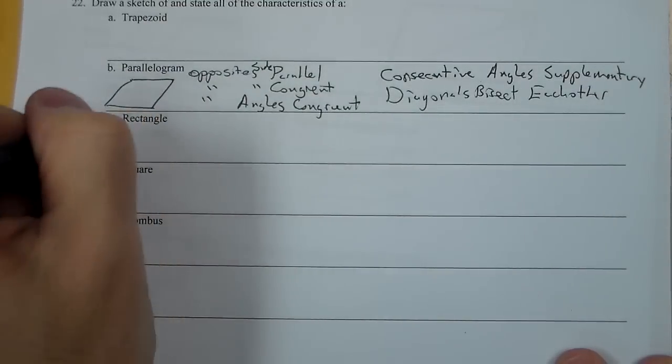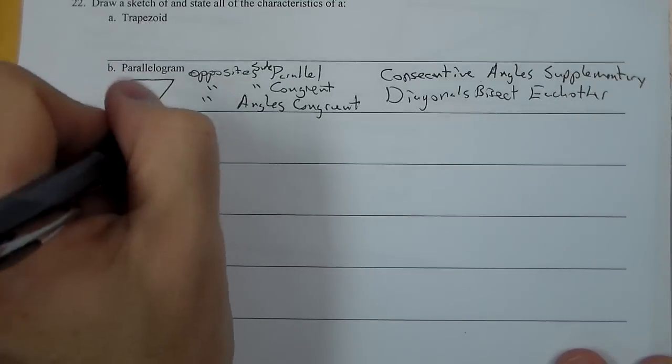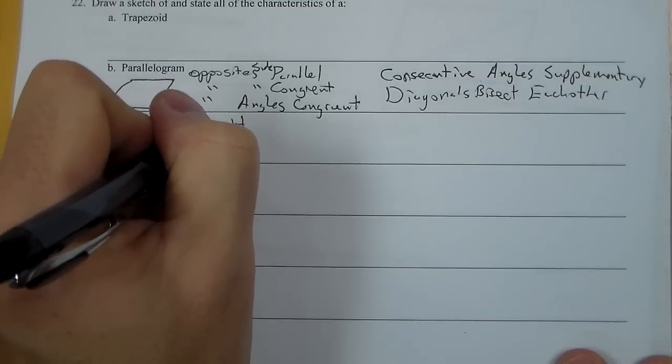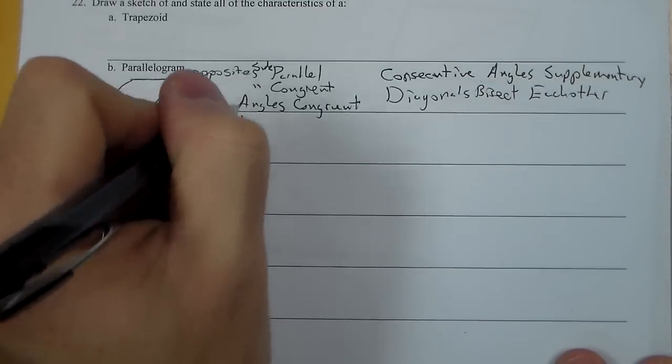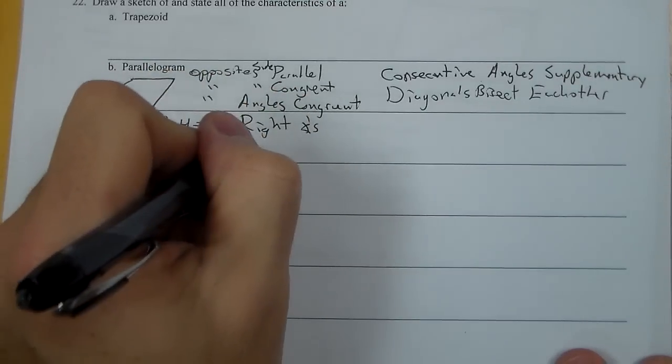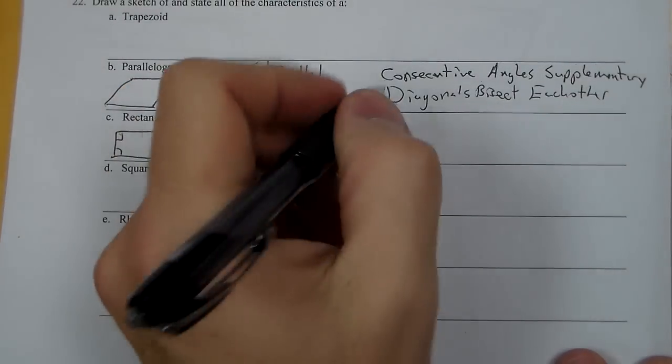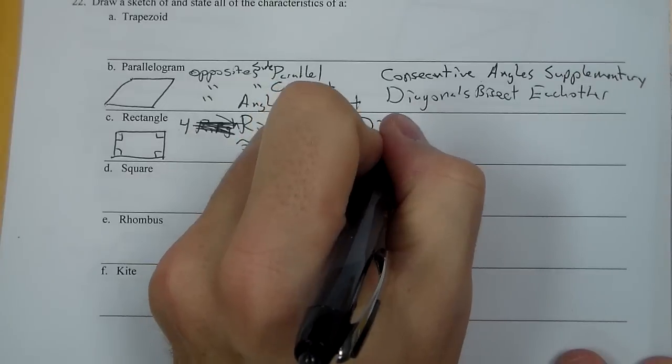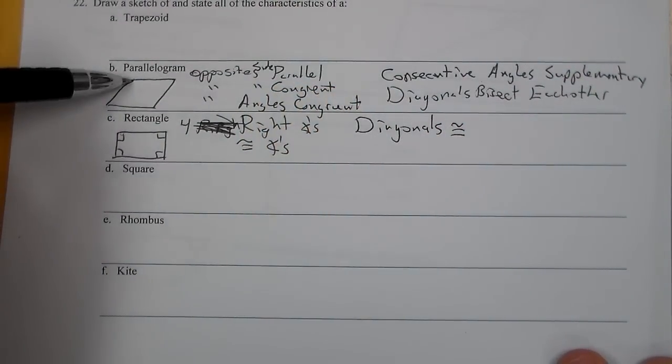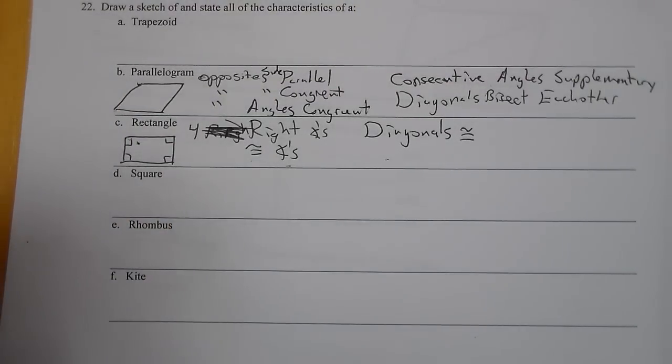Then the next one down is we can look at a rectangle. Now a rectangle is a parallelogram that has special properties. It has four right angles. Now those four right angles also congruent angles, you could say either way 90 degrees or they're just congruent, and it also has diagonals congruent. Now anything that works for a parallelogram also works for a rectangle, but it's these properties that qualify it to be a rectangle.